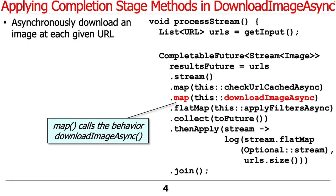Recall how we're using DownloadImageAsync. By the time that method is invoked, we've already used the factory method supplyAsync in the context of checkURLCachedAsync to start the process of determining whether or not we've got a cached image. What will be coming through the stream at that point will be a stream of CompletableFutures to Optional URLs.